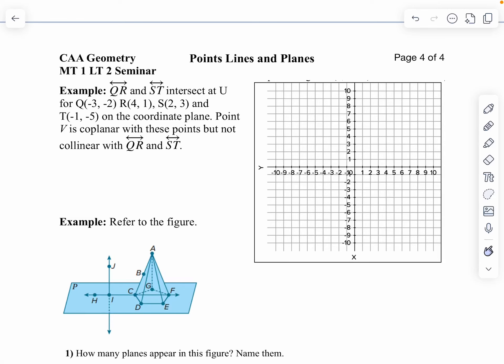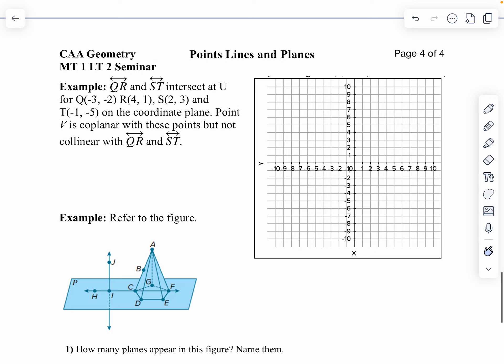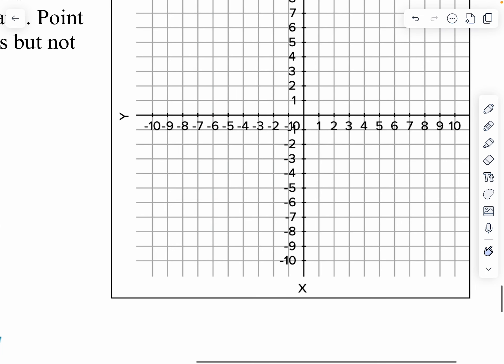Next example, we have line QR and ST, they're going to intersect at U. And I've got Q is at negative 3, negative 2. So let's pull this up a little bit. And sorry about this, I just noticed they copied this from the textbook, and there's something wrong with the textbook.